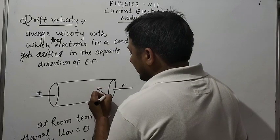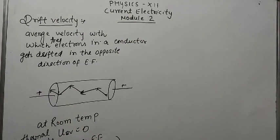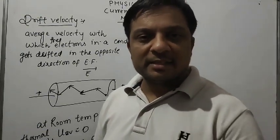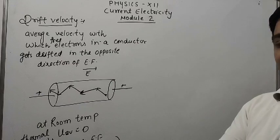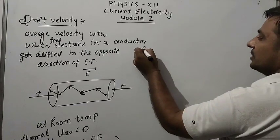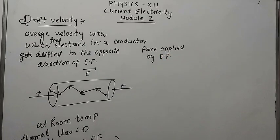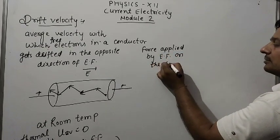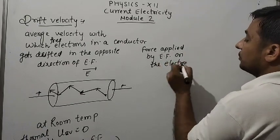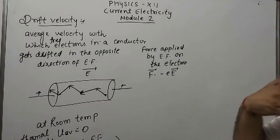When electric field is applied, electrons are drifted in the opposite direction. The direction of electric field is from positive to negative. The electron has charge minus e. If a charge is kept in an electric field, the field applies a force given by F equal to Q into E. So the force applied by the electric field on the electron is F equal to minus eE.